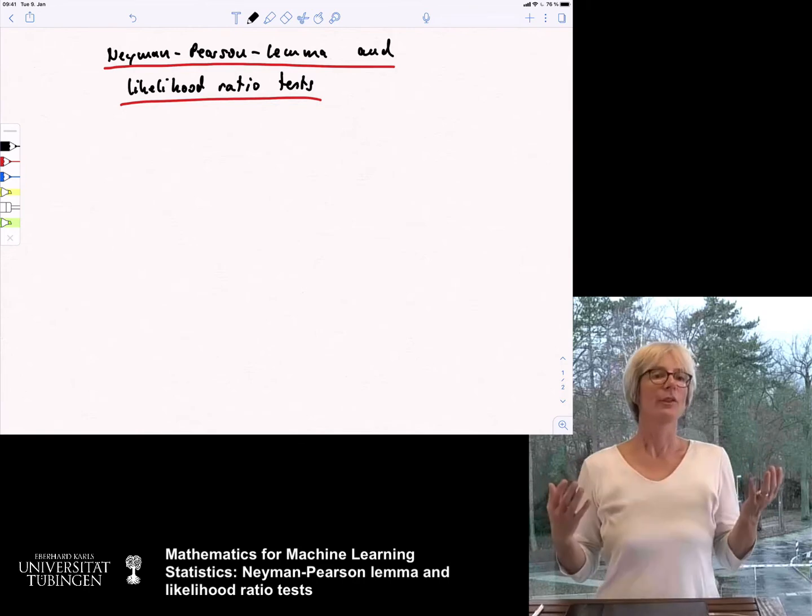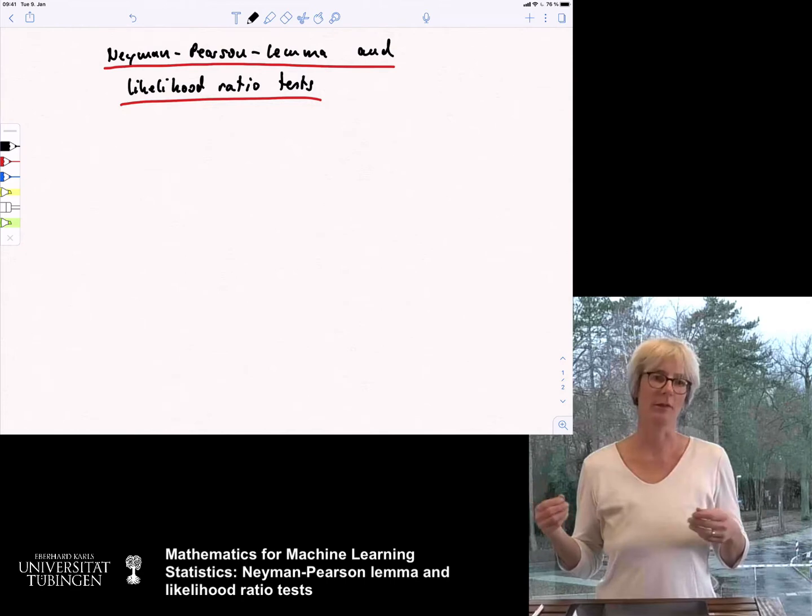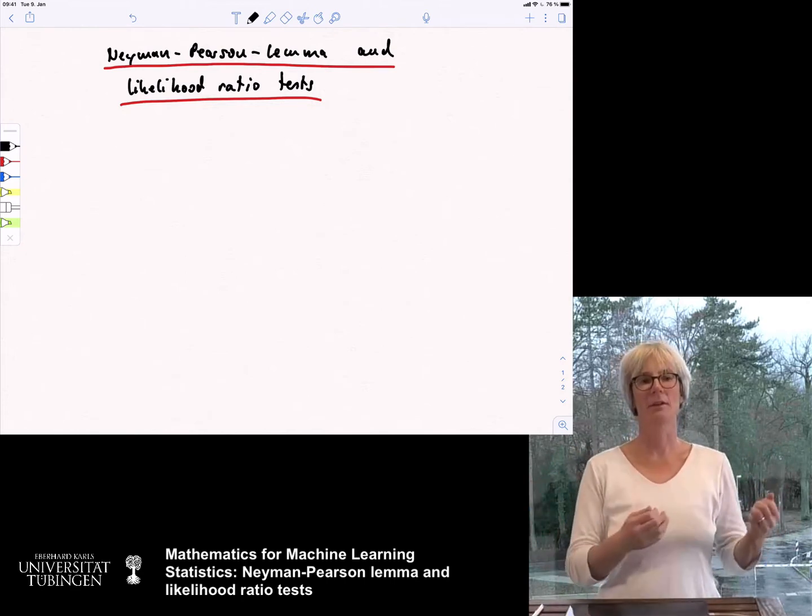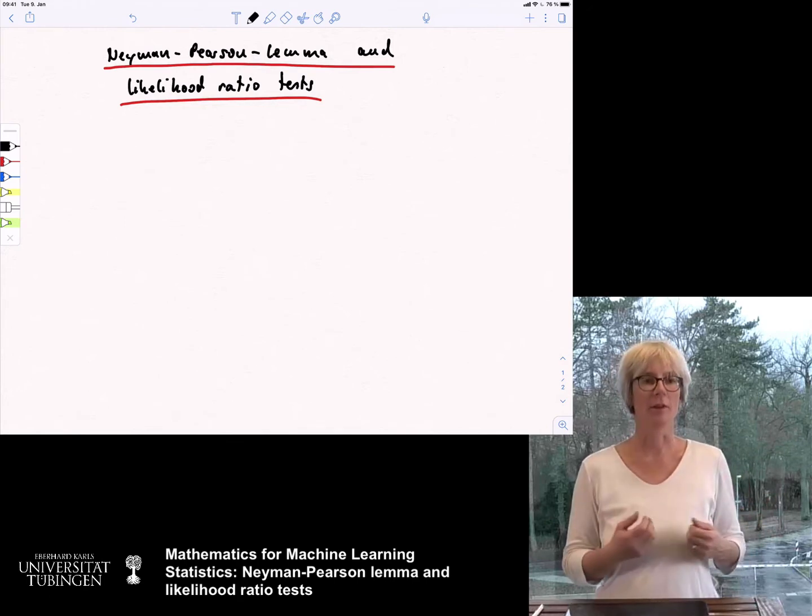And then, if you are lucky, if you have several choices of tests which all satisfy your guarantee on the type 1 error, you can then go and try to select one that has a good power, that means a small type 2 error.